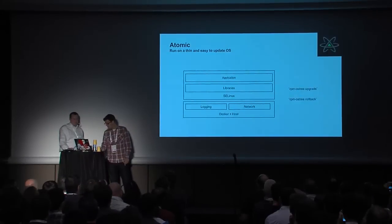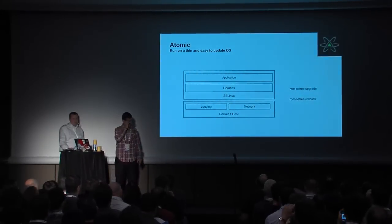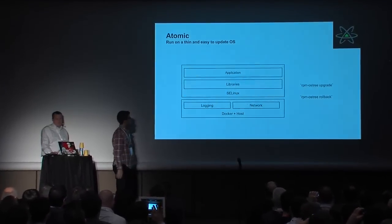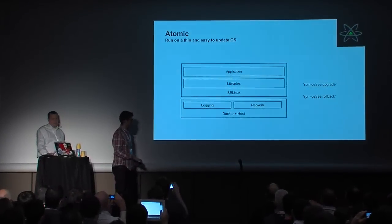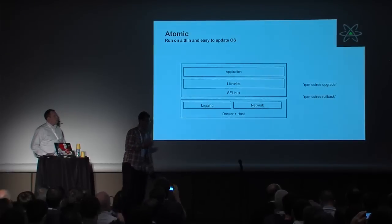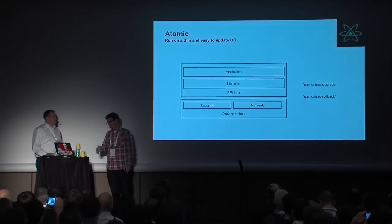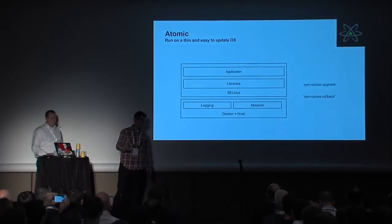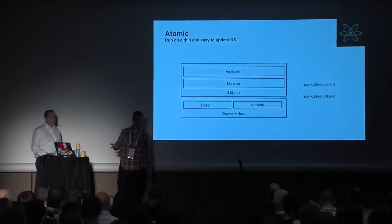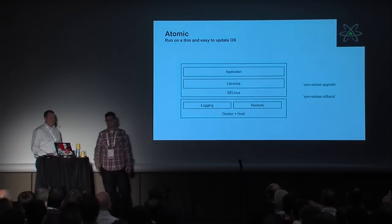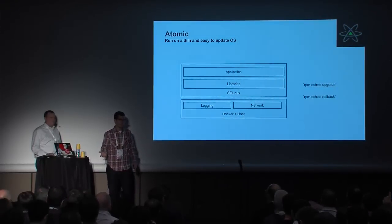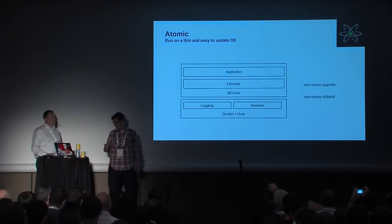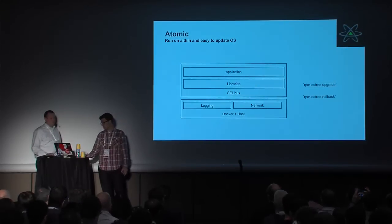Atomic is a thin operating system optimized for containers. It includes Docker, Kubernetes, and etcd to run containers. It doesn't include much else — it's very thin and light — and it allows you to update using new mechanisms like OSTree, so you can rebase the OS very quickly and upgrades happen very fast.